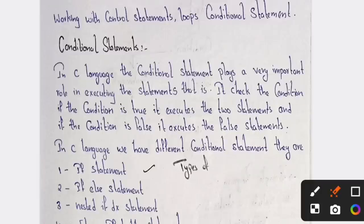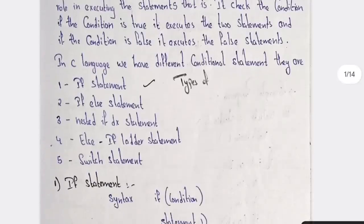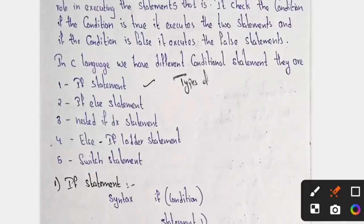It checks the condition: if the condition is true it executes the true statements, and if the condition is false it will execute the false statement. So this is the conditional statement introduction. The types you will have are: if statement, if-else, nested if, if-else-if, and switch statement.